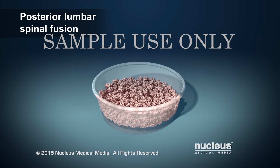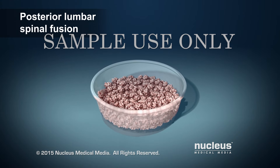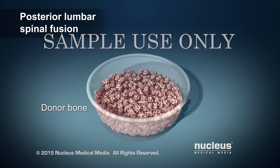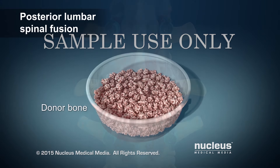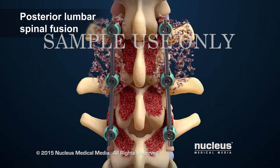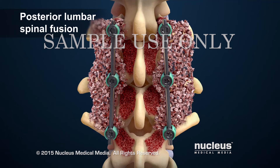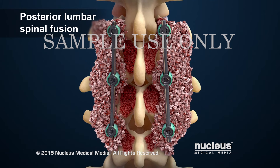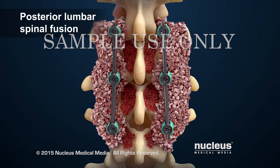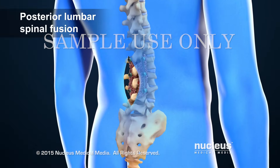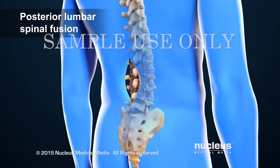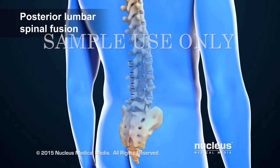The surgeon may remove small pieces of bone from the pelvis to use as bone grafts. Other times, the surgeon may choose to use donor bone from a bone bank for grafting. The bone grafts will be placed along the spine to allow the vertebrae to grow together and keep the spine stable. At the end of the procedure, the skin incision will be closed with stitches.